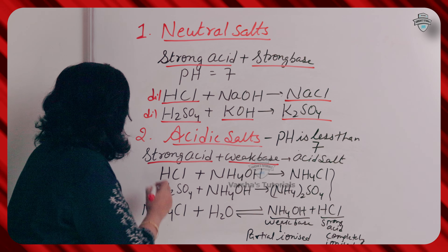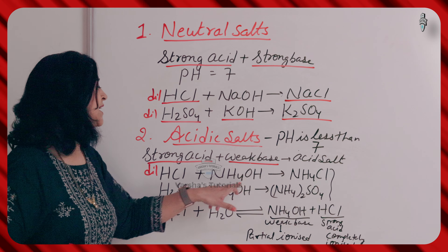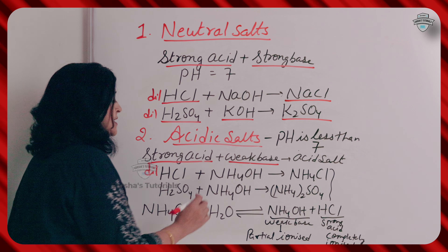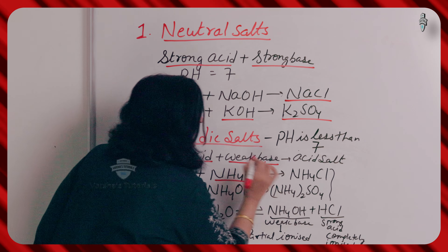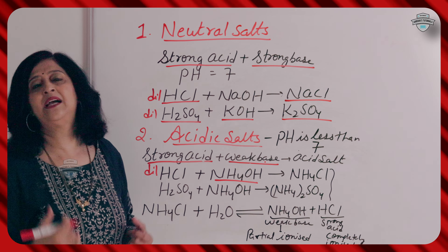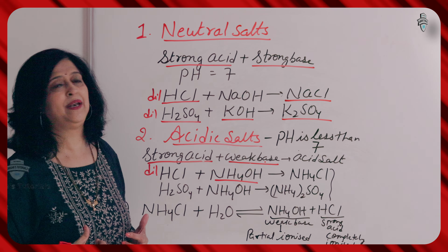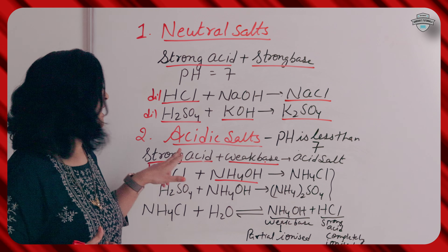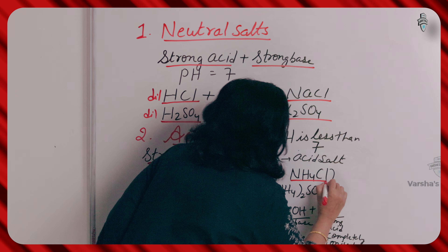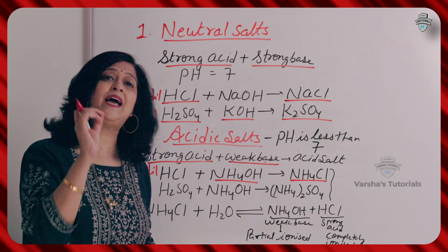Let's look at this example. Here I have taken dilute HCl. We all know dilute HCl is a strong acid. We do this reaction with ammonium hydroxide. Ammonium hydroxide is a weak base — when you put it in water, it is not completely ionized; it does not fully give OH⁻ ions and remains more in molecular form. So NH4OH is a weak base. When dilute HCl (strong acid) reacts with ammonium hydroxide (weak base), ammonium chloride is formed. Ammonium chloride is made from strong acid and weak base — that is why it is an acidic salt.